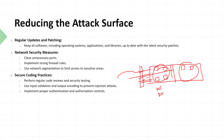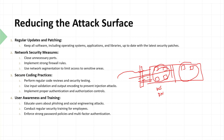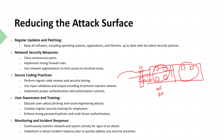Additional controls include secure coding practices such as regular code reviews and proper authentication, as well as human-level controls like security awareness training and enforcing strong password policies. Continuous monitoring helps track deviations and apply patches accordingly. These are the controls by which you can reduce the attack surface.